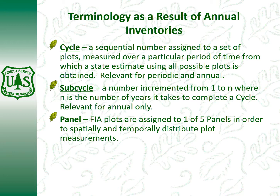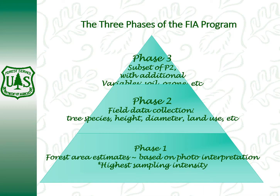A cycle is when they complete all of those plots. All 6,000 plots — it may be a six-year cycle before they go and get those plots. That's a term I want you to be aware of. You may hear terms called site cycles, sub-cycles, and panels. Phase one was looking at forest area estimates based on photo interpretation or satellite imagery, basically breaking up the land into different forest types and coming up with estimates.